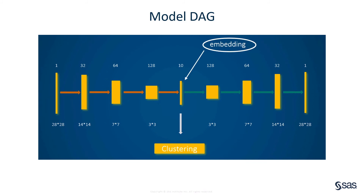For deep clustering, we add a clustering layer after the bottleneck layer to make the entire model a multi-task model. Then during training, the results in the clustering layer help improve the features so they are more representative, which in turn increases the clustering accuracy.